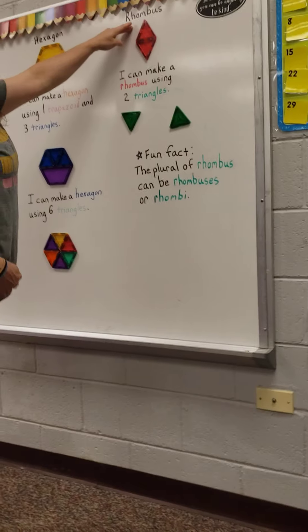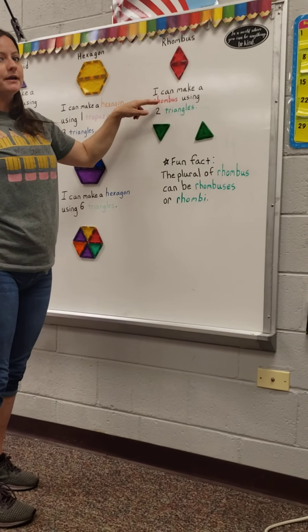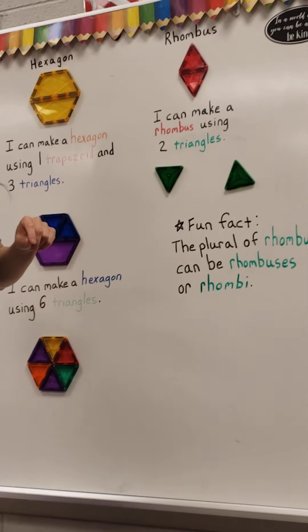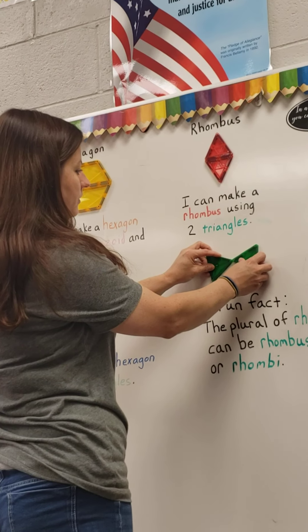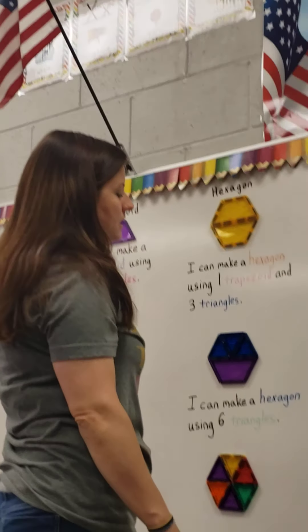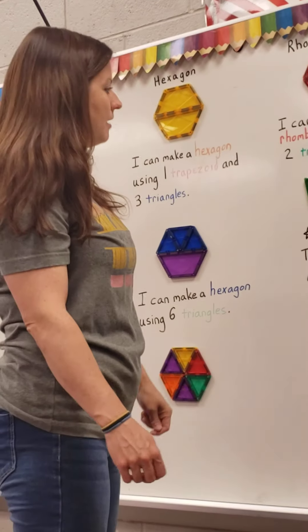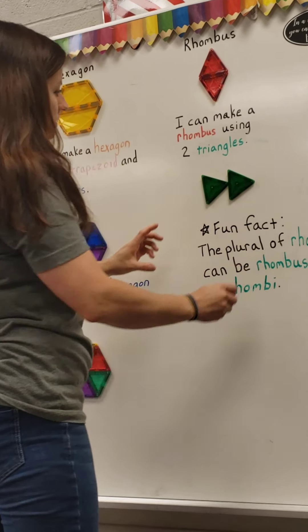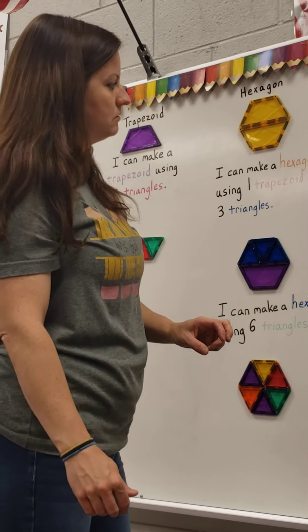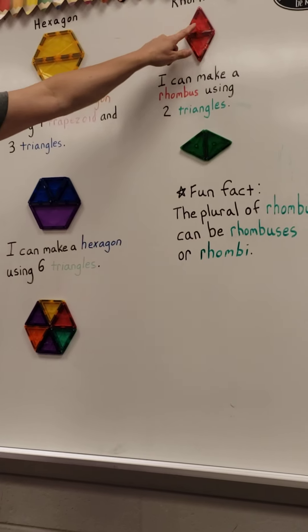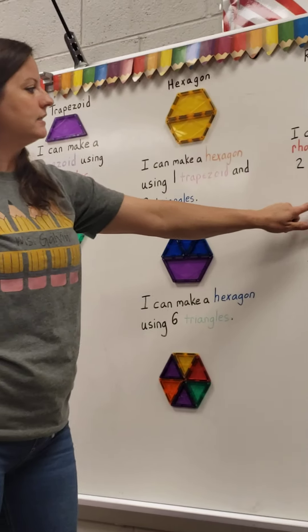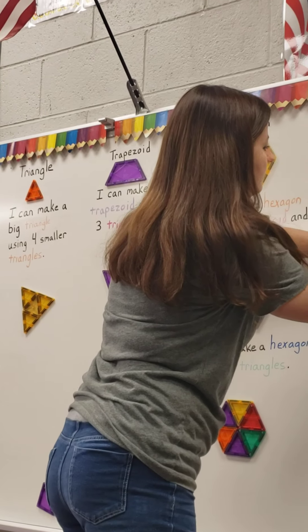Now let's come over here to the rhombus. I can make a rhombus using two triangles. I have one triangle, two triangles. Well, that doesn't look like a rhombus — it looks like a hair bow! But there it is — I made a rhombus! It doesn't matter which direction it's facing, it's still a rhombus. I can turn it this way — a rhombus or a diamond.